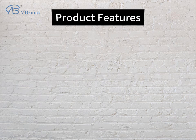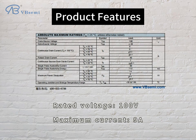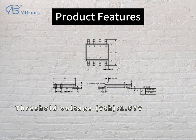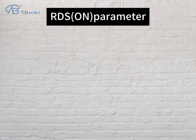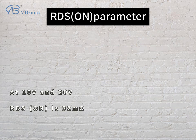Product features: rated voltage 100V, maximum current 9A, threshold voltage VTH 1.87V. RDS(on) parameter: at 10V and 20V, RDS(on) is 32mΩ.